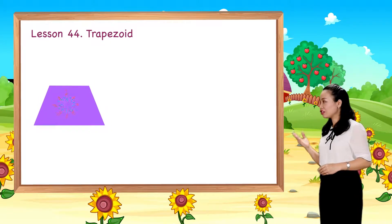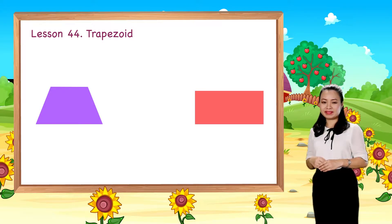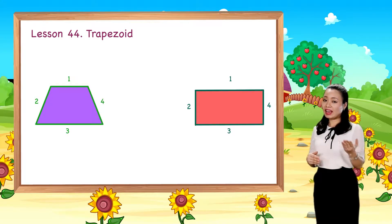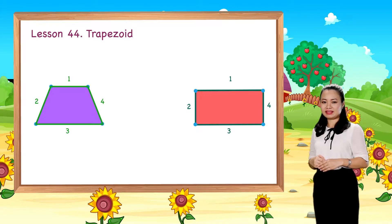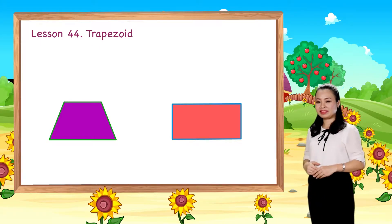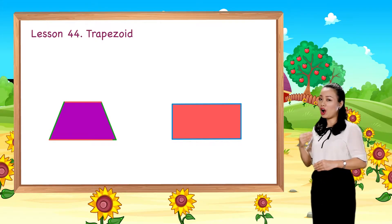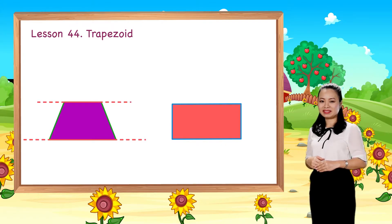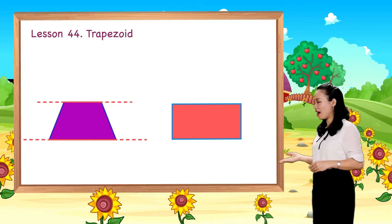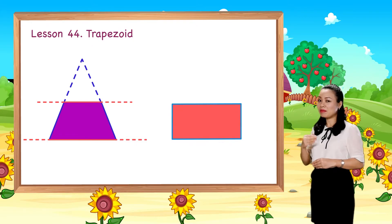How are the trapezoid and rectangle alike? They both have four straight sides and four corners. How are the trapezoid and rectangle different? The trapezoid has one pair of opposite sides being parallel and the other pair not parallel. The rectangle has both pairs of opposite sides being parallel.